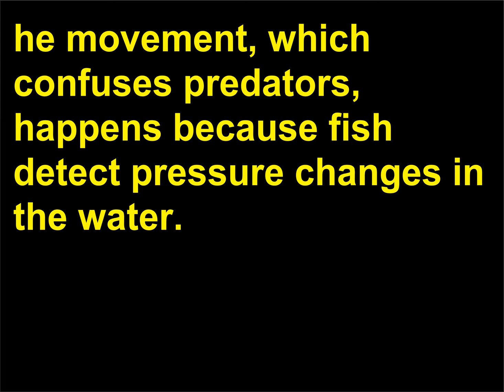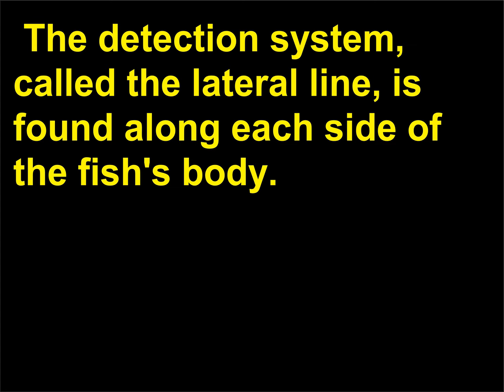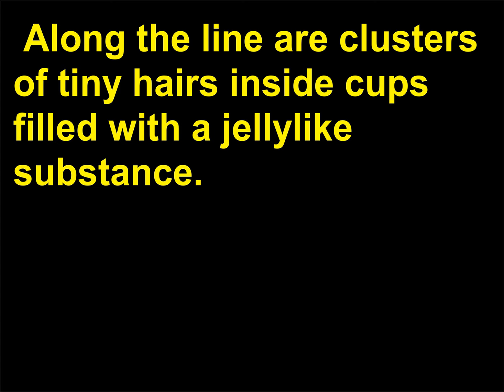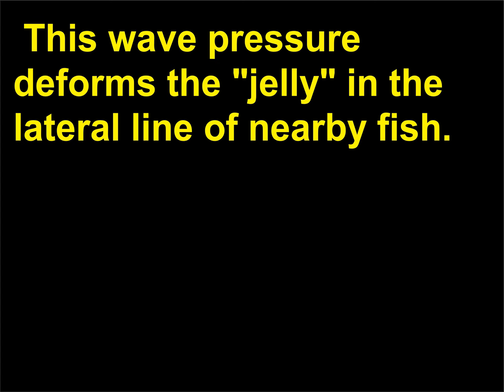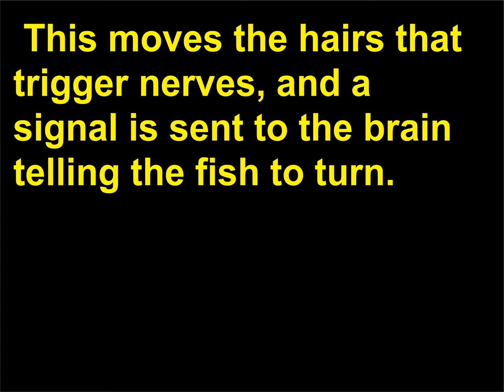How do fish swimming in a school change their direction simultaneously? The movement, which confuses predators, happens because fish detect pressure changes in the water. The detection system, called the lateral line, is found along each side of the fish's body. Along the line are clusters of tiny hairs inside cups filled with a jelly-like substance. If a fish becomes alarmed and turns sharply, it causes a pressure wave in the water around it. This wave deforms the jelly in the lateral line of nearby fish, moving the hairs that trigger nerves, and a signal is sent to the brain telling the fish to turn.